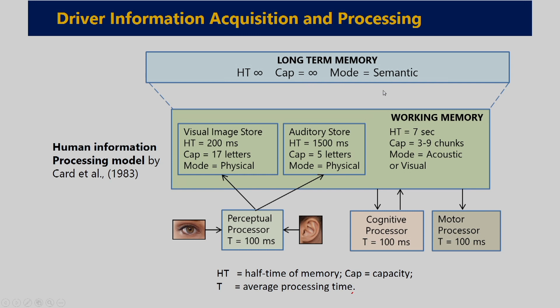From working memory, information comes to the cognitive processor. The cognitive processor, with the help of working memory, ultimately guides the motor processor, and the motor processor executes the motor response. To understand this human information processing model, we need to understand the individual components, which we will discuss in detail.